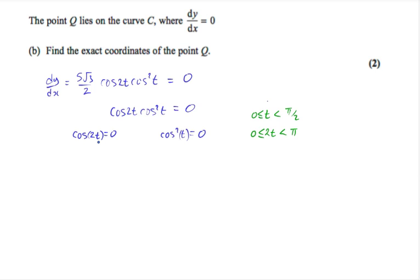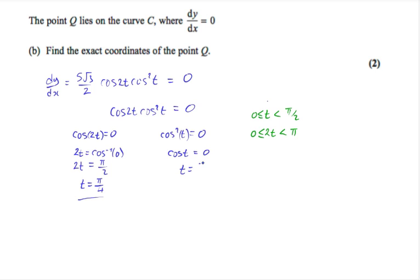Whenever we have a product of two terms equal to 0, either the first term equals 0 or the second term equals 0. So we have cos 2t equals 0 or cos squared t equals 0. To find 2t, we take the arc cos of 0, which gives us pi over 2. Dividing by 2 gives t equals pi over 4, which is within the range. For the second equation, square rooting gives cos t equals 0, so t equals pi over 2. Notice that t cannot equal pi over 2 — it must be strictly less than pi over 2 — so we ignore this answer.